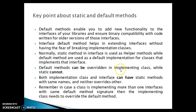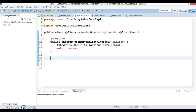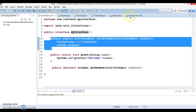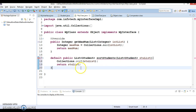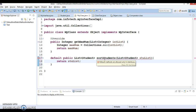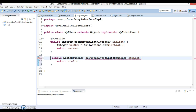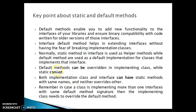So, default methods can be overridden in the implementing class while static methods cannot. If you have a default method in your interface, you can override it, and overriding is optional — it depends on the developer. You simply remove the 'default' keyword in the overriding class. Now, both the implementation class and the interface can have static methods with the same name, and neither overrides the other. You can define a static method with the same signature in both the interface and the implementation class; they are referred to by their corresponding class or interface name and work perfectly fine, but you cannot override one with the other.